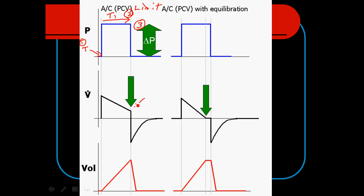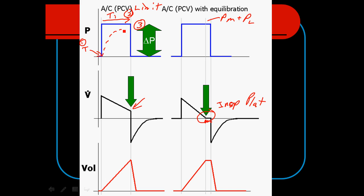An important concept is truncation of the inspiratory flow. When there is a small inspiratory plateau, we have equilibrium between mouth pressure and lung pressure — the P-mouth and P-lung are equal. However, when inspiratory flow is truncated, pressures in the lungs are still building at the moment we go into exhalation, and we don't know exactly how much pressure is in the lungs. In a zone with a decreased time constant, equilibrium is achieved more quickly.